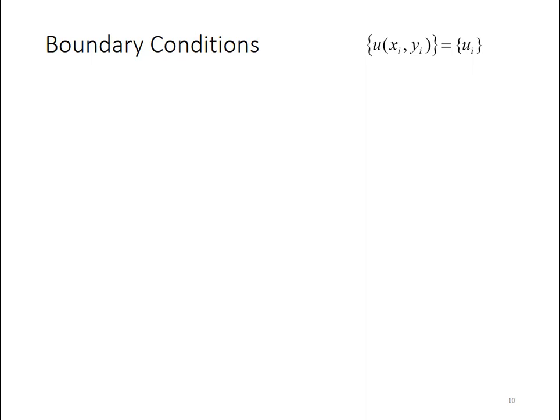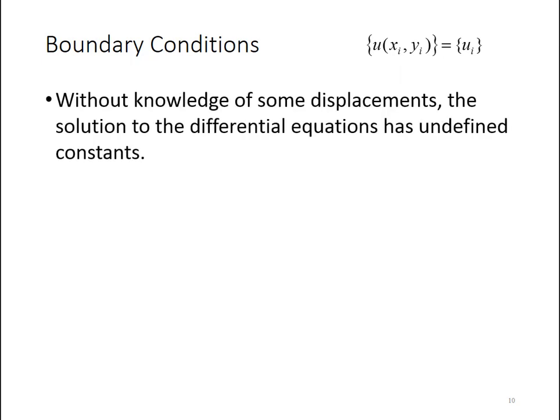Let me make a few quick comments on the last type of equation that governs the boundary value problem for theory of elasticity. Boundary conditions are known values of displacements or derivatives of displacements. So we know the displacement u at some location xi, yi, and we know that to be ui. I want to make a few comments about this. First off, this is a necessary part of solving the boundary value problem. If we don't have boundary values, then the solution of the differential equations are going to have constants.